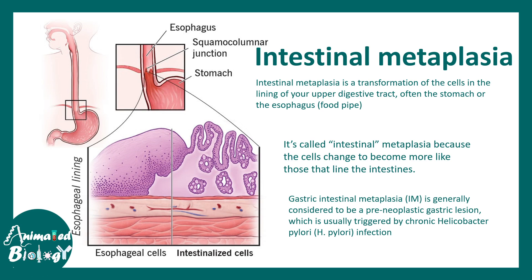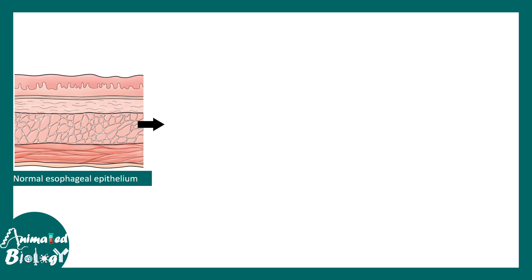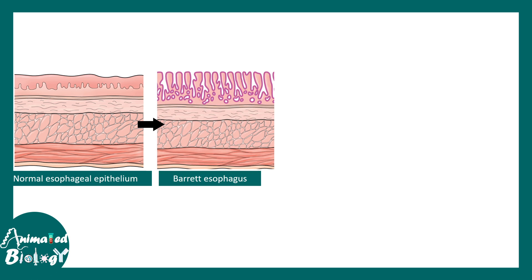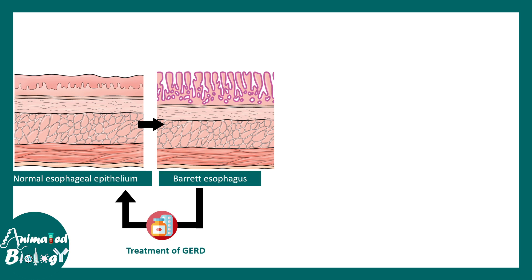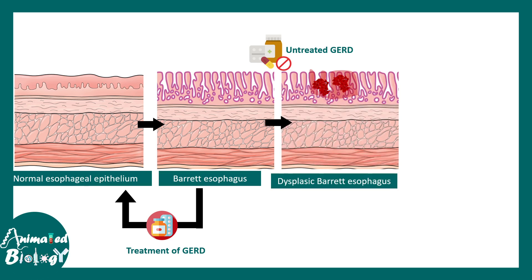There are stages to this metaplasia: normal esophageal epithelium gets converted into cuboidal epithelium — this is Barrett's esophagus. If GERD or acid reflux is treated and given time for recovery, normal esophageal epithelium can be restored since this process is reversible. But if untreated with repetitive episodes, dysplastic or Barrett's esophagus can develop.